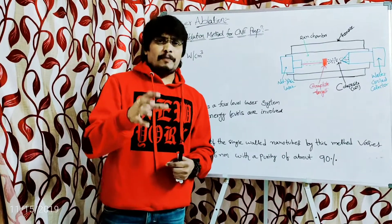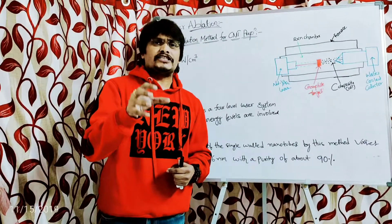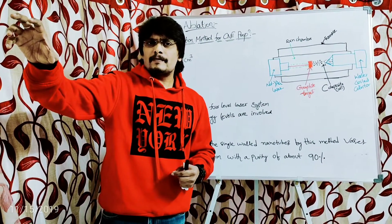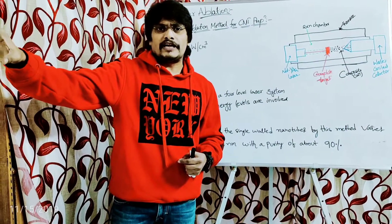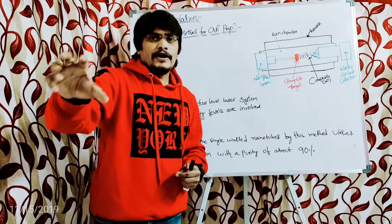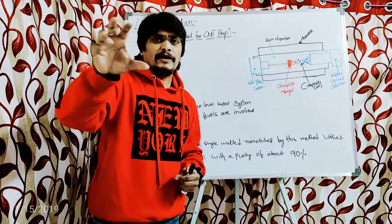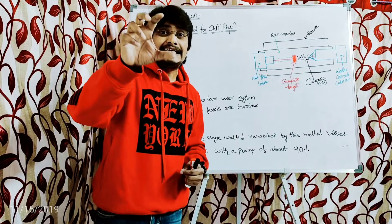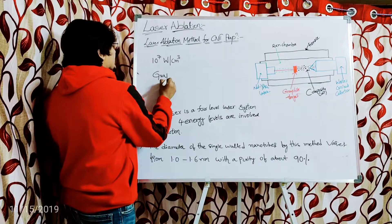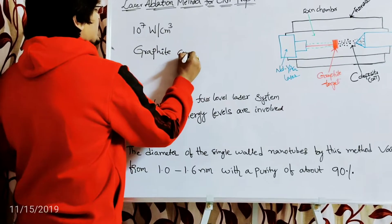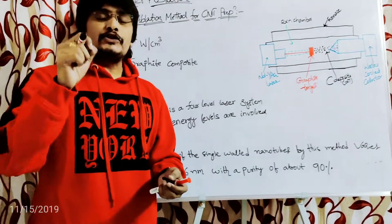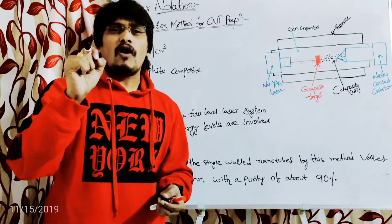In this laser ablation method for the preparation of carbon nanotubes, what is the target source? Since the product is carbon nanotubes, the target should be rich in carbon content. The substance rich in carbon content is graphite, so the target is a graphite composite.